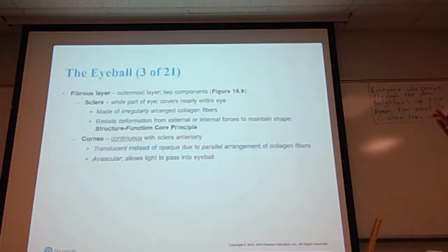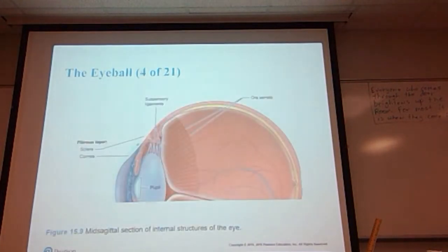The cornea is continuous with the sclera anteriorly or to the front. It is translucent instead of opaque due to parallel arrangements of the collagen fibers. It is avascular, which allows light to pass into the eyeball. What makes the cornea clear as opposed to white is that in the white part of the eye, all of these collagen fibers are arranged sporadically—they go all sorts of different directions and lay across each other. In the cornea, all of the fibers are parallel to one another. And again, here is a cross-section showing the sclera and then the cornea in front.